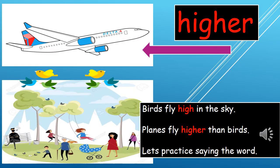Our next word is higher. Maybe you know the word high — we've spoken about it many times before. But higher is a form of the same word. Let's look at our examples: birds fly high in the sky — it shows us where they are. But planes fly higher than birds. We use this word to compare two things. Let's practice saying it out loud: higher.